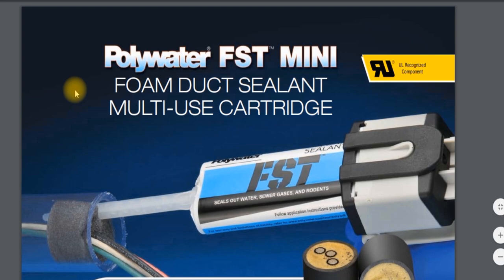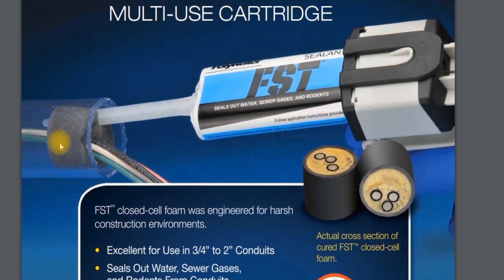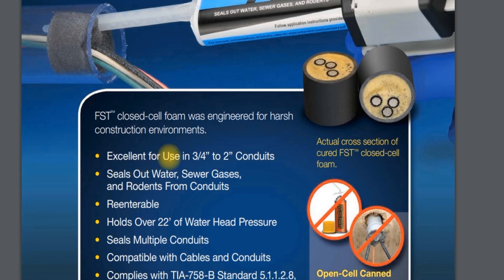And then what you're going to want to do is, for the inside, for where the cable goes in, you're going to want some of this poly water mini foam duct sealant. This works really great, excellent for use in conduit from three quarter to two inch. That's probably going to take care of most of what you're doing if you have a sleeve with an aerial cable coming through it.